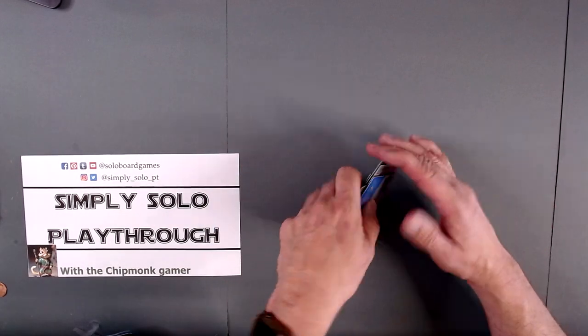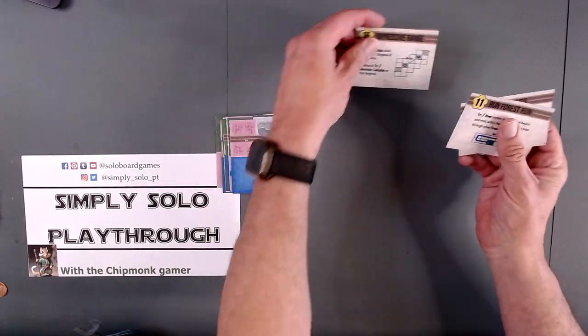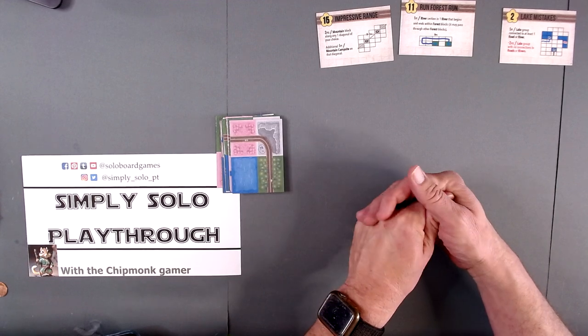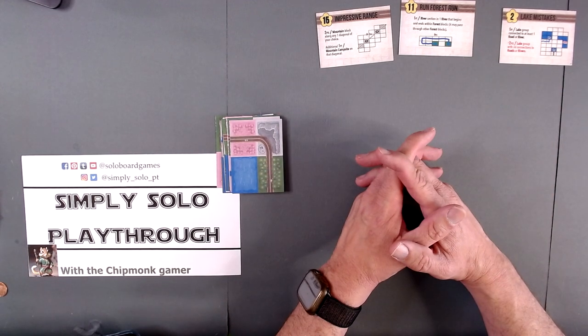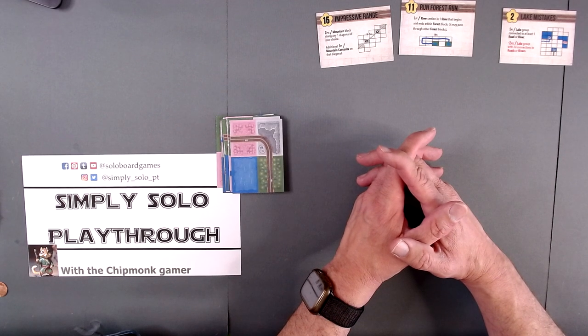We take out three goals. These are our goals. Lake Mistakes: lake group connected to at least one road or river. That's easy enough.